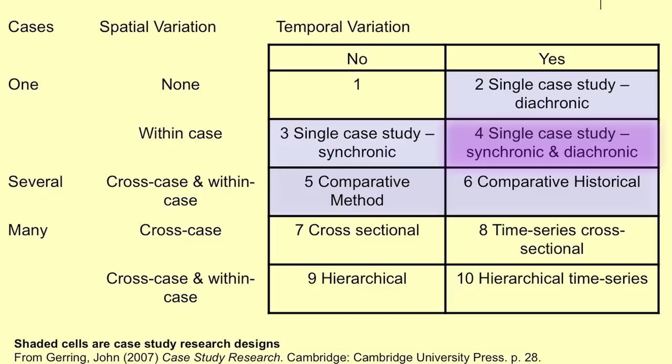Then we have comparisons between cases themselves, which involves multiple cases. You've already seen one or two studies where multiple cases are involved — comparing one company with another company, or one hobby society with another, one tennis club against another. You can use the comparative method, and there are a whole set of issues about how you choose those cases. A case study approach using several cases is where you start doing comparisons, and you can make those comparisons over time, giving a comparative historical approach to how different groups changed over time.